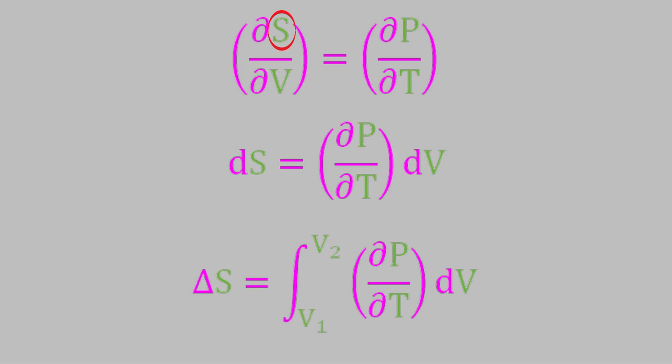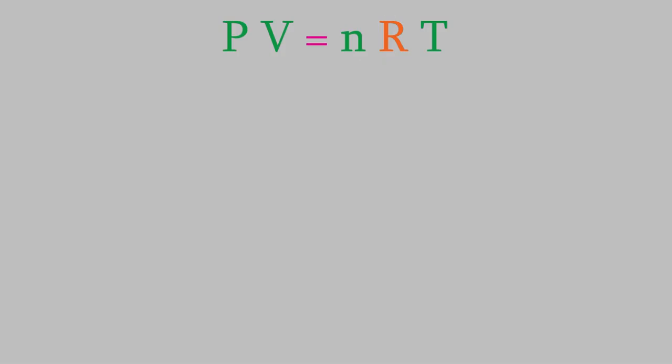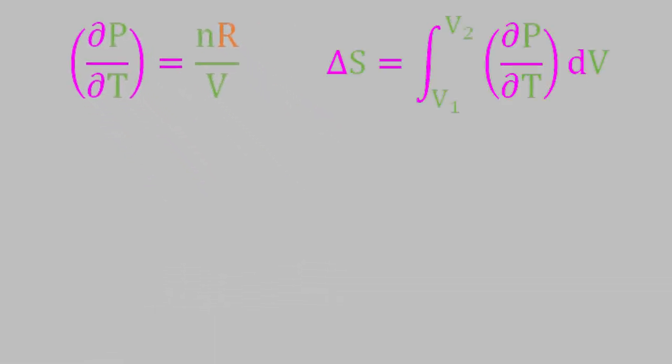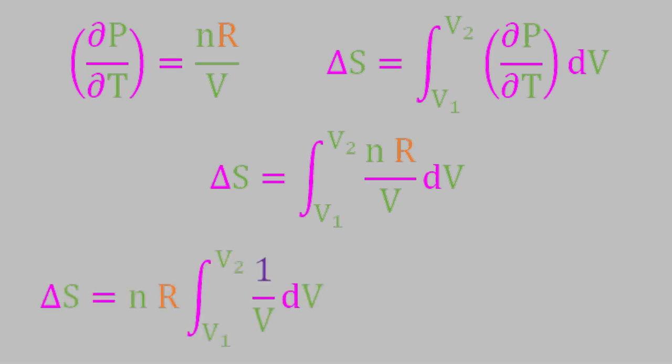For example, suppose the system we're looking at is an ideal gas. In that case, we can use the ideal gas law. If we solve for the pressure, we get this. And now, we can take the partial derivative with respect to the temperature, which is just nR over V. We can now plug that expression for the partial derivative into our integral. Since n and R are both constants, we take them out of the integral, and when we now solve the integral, we get this.